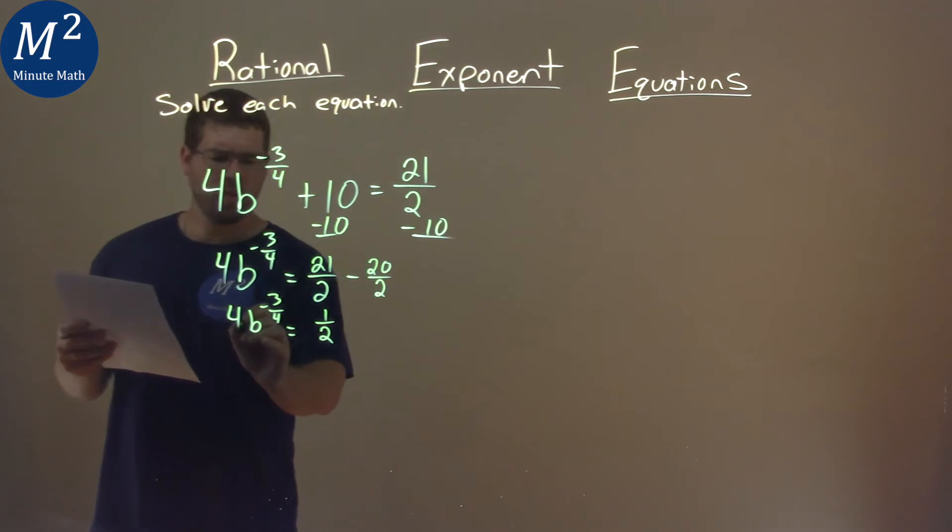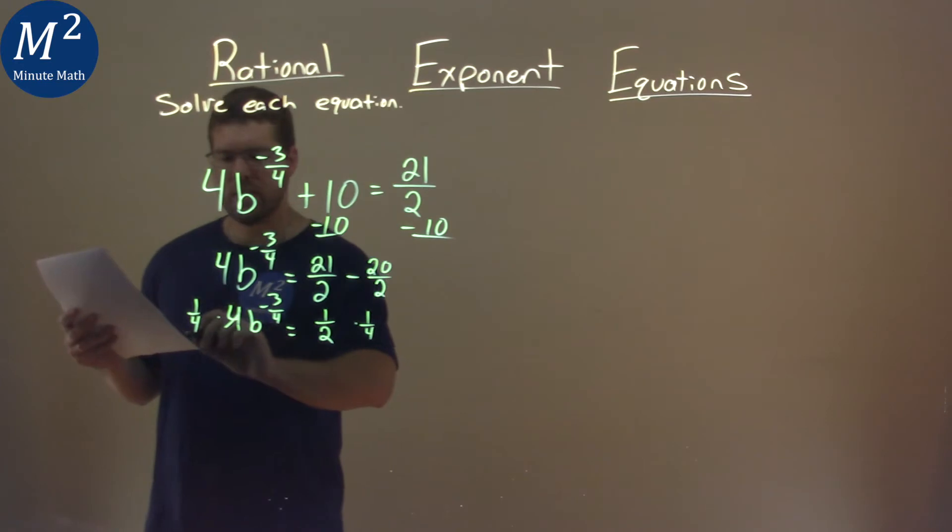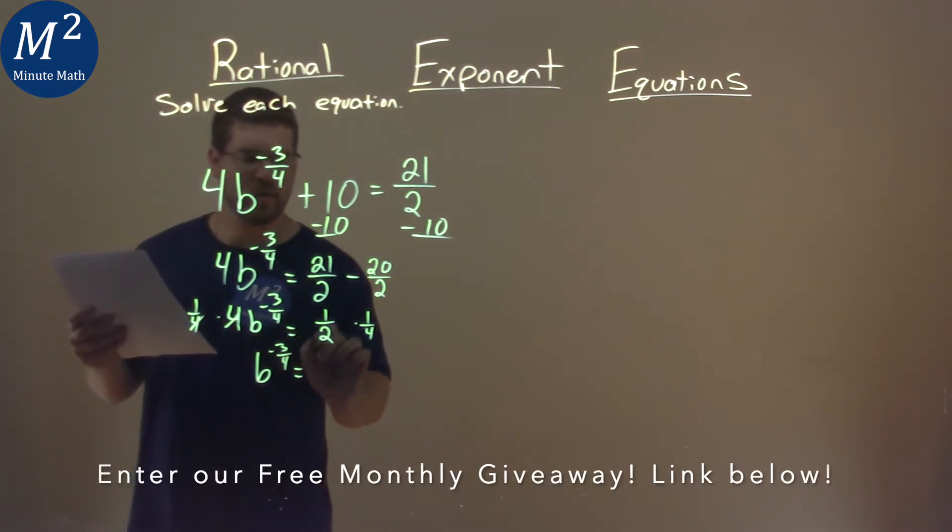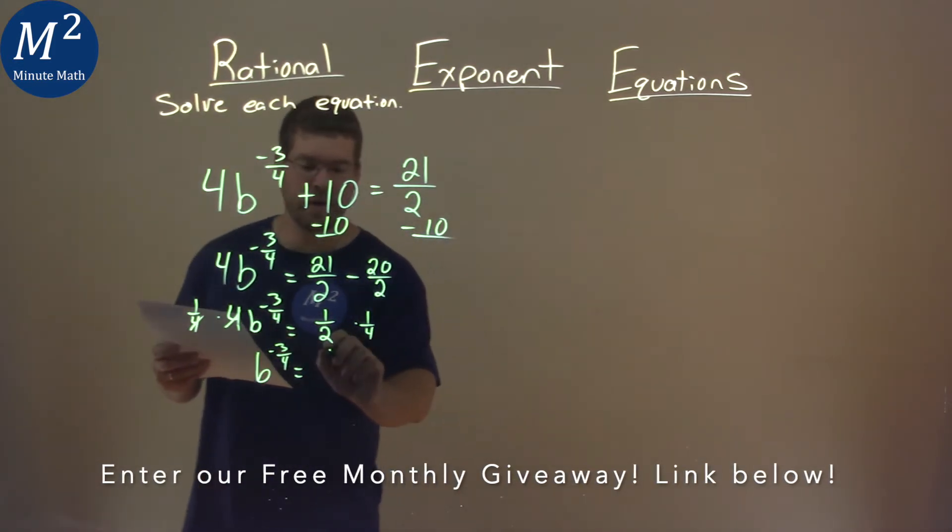Now, to get rid of this 4 here, I'm going to multiply both sides by 1 fourth. These cancel, and we're left with b to the negative 3 fourths power on the left, but on the right, 1 half times 1 fourth is 1 eighth.